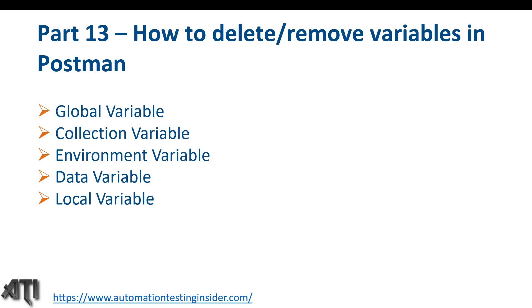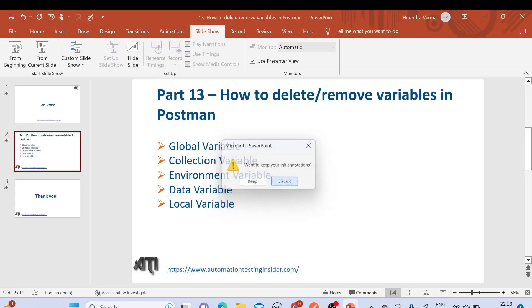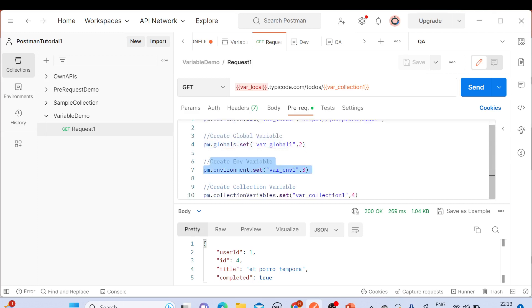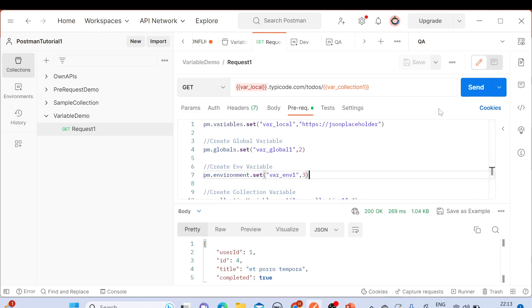Hello everyone, welcome back to another video of Automation Test Insider. This is Part 13 of the API testing series, and today we are going to talk about how we can delete or remove variables in Postman — especially global variables, collection variables, and environment variables. If you remember, we have already created different variables like global, environment, and collection variables using pre-request scripts as well as particular sections.